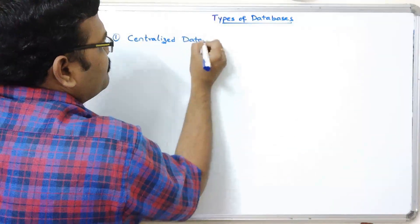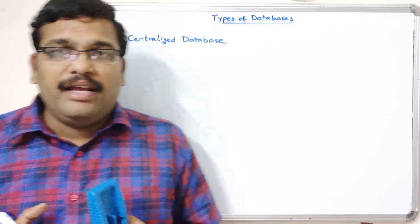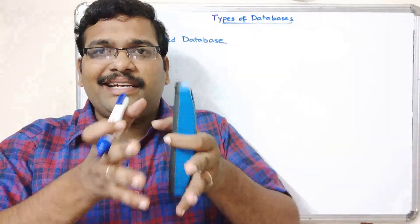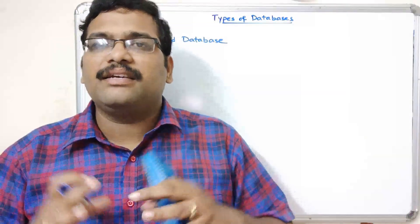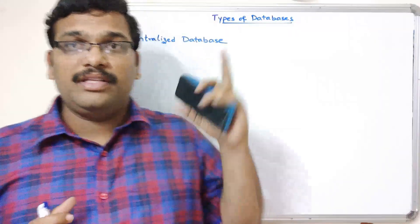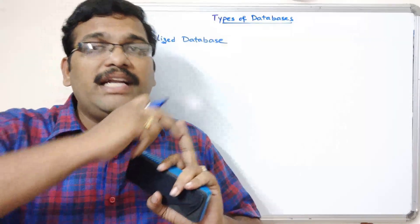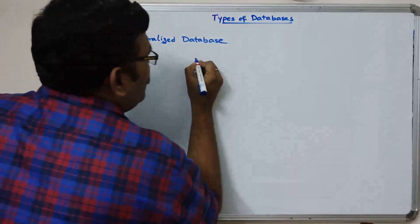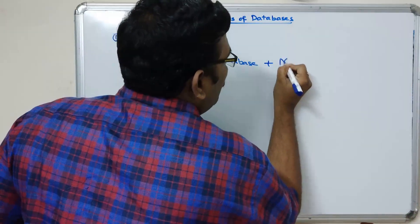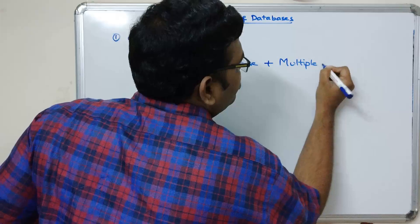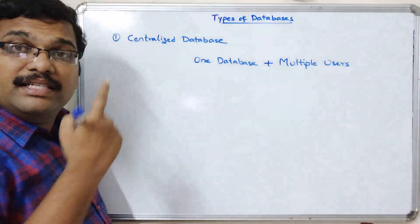The first type is the centralized database. The name itself indicates that the database is maintained at a central level, and multiple users from different places access that common database. So there is one database accessed by multiple users — that is called the centralized database.